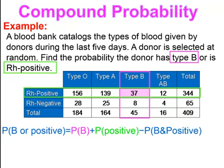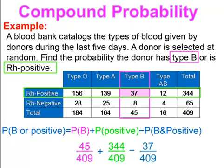When doing the probability, you need to take out the overlap — the doubling of that 37. Find the probability of B first: 45 over 409. Then find the probability of positive: 344 over 409. Then subtract out one of those 37s — 37 over 409 — because you used it twice, so you only subtract out one. The probability of type B or RH positive would be 0.861.